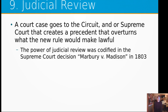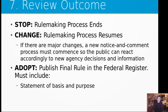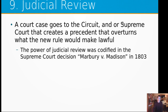Step nine is judicial review. Under Marbury v. Madison in 1803, the Supreme Court can set a new precedent that says a new rule is unlawful, and this can even happen in the middle of the rulemaking process — effectively stopping it. It can stop the rulemaking entirely, or it could result in significant parts being completely removed.